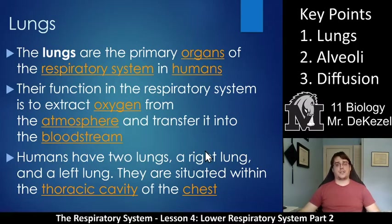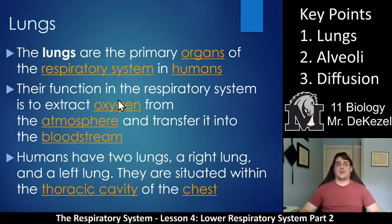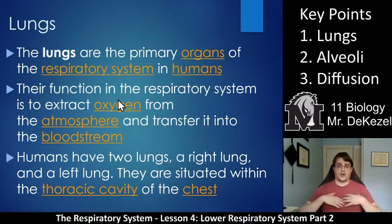The lungs are the primary organs of the respiratory system in humans. Their function is to extract oxygen from the atmosphere and transfer it into the bloodstream, and alternatively to extract CO2 from the bloodstream and expel it into the atmosphere. Humans have two lungs — a right lung and a left lung — situated within the thoracic cavity of the chest. We have two lungs and they are slightly different sizes.